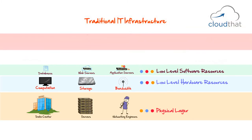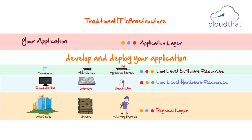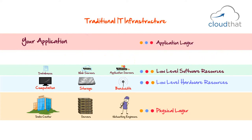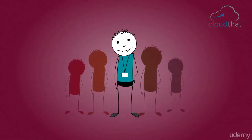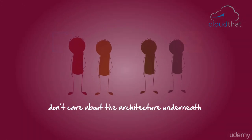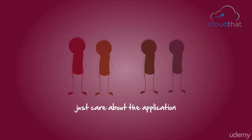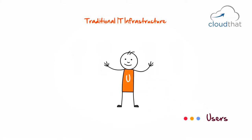Next, you have your application layer — this is where you develop and deploy your applications, and where you ideally want most of your developers and testers to spend their time. All focus and effort should be on your application, because at the end of the day, this is what distinguishes you from your competition. This is what makes Facebook Facebook and Google Plus Google Plus — most users don't care about the architecture underneath, they just care about the application. Finally, you have your users, who use a variety of devices including Windows, Linux, Mac PCs, and smartphones, located in different geographic regions.